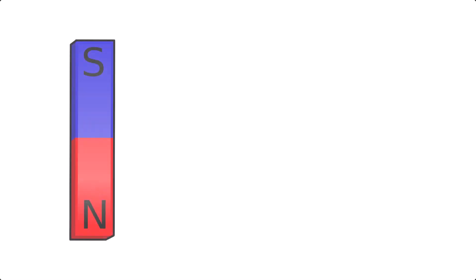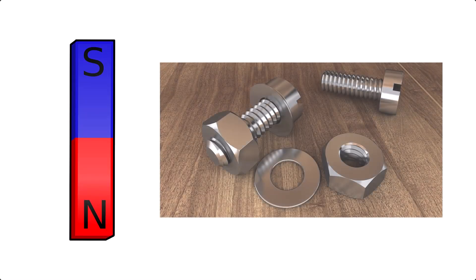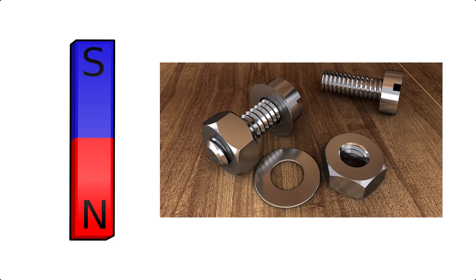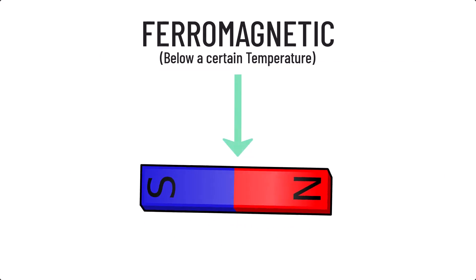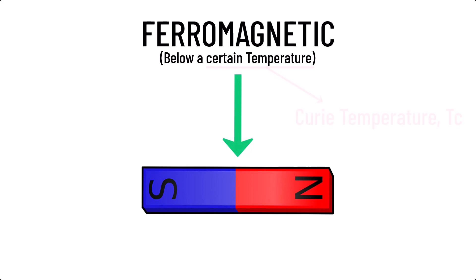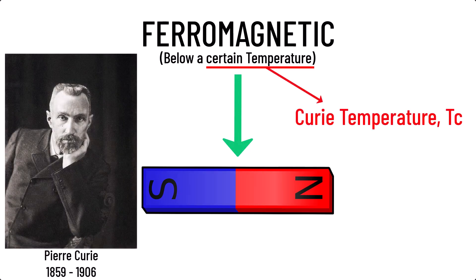Consider a magnetic material, such as a bar magnet or any metal. Below a certain temperature, such materials become ferromagnetic. This temperature is known as the Curie temperature, named after French physicist Pierre Curie, the husband of Marie Curie.